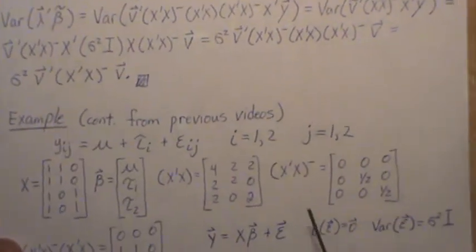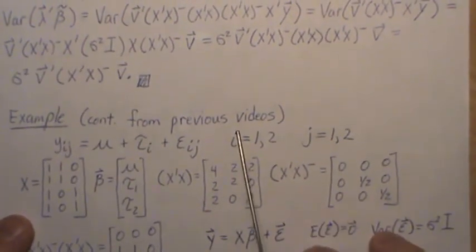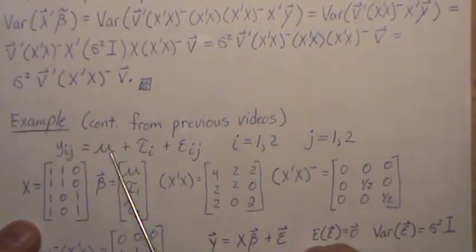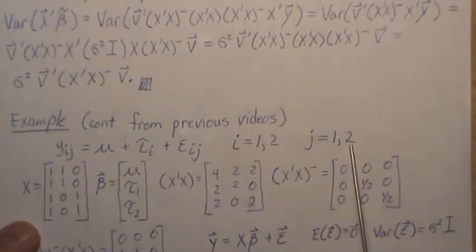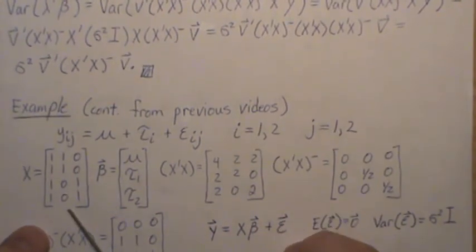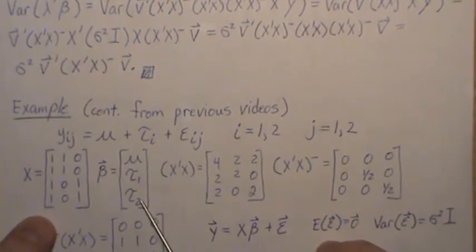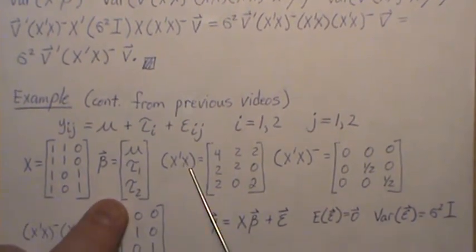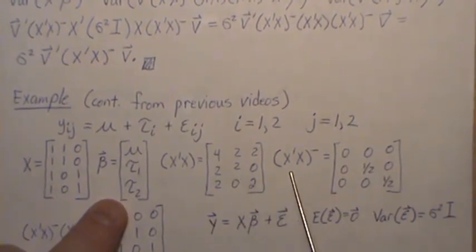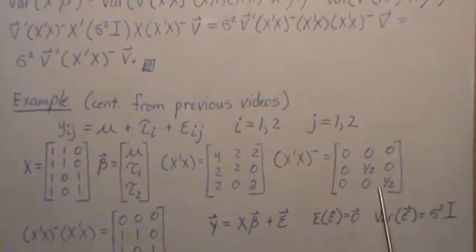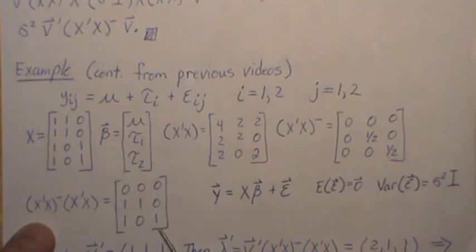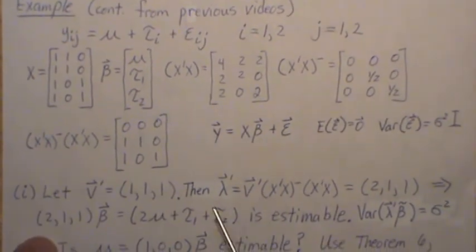Now let's do an example, continuous from the previous example. We have an effects model. So there's two groups, two observations per group. This is the design matrix. This is the beta matrix. Putting it in matrix form. X transpose X is this. The generalized inverse is this, a generalized inverse. And then this matrix product is this.